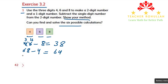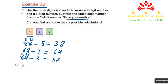Or we can make 64 minus 8. Again, we cannot subtract 8 from 4. We borrow from 6. 6 becomes 5, and 4 becomes 14. 14 minus 8 equals 6, and 5 minus nothing is 5. The answer is 56.